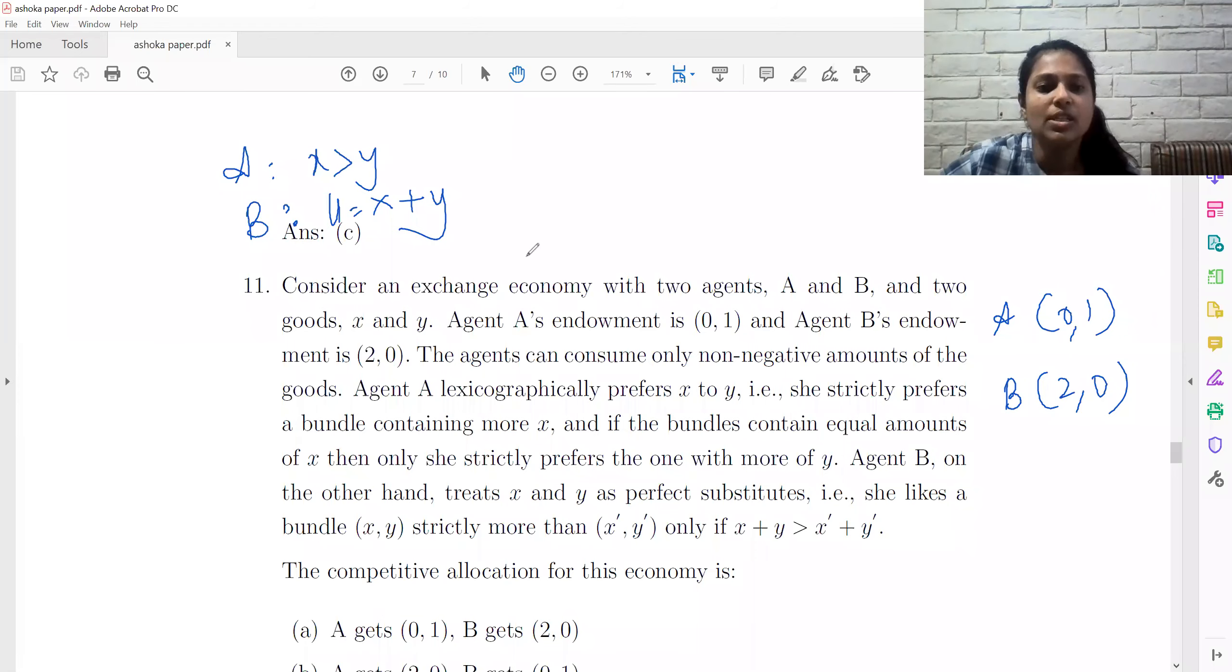This is a Shoka University sample question 11. We have two agents A and B. Agent A's endowment is given to us as 0,1. And Agent B's endowment is given to us as 2,0. A's utility function is given as lexicographically preferring X to Y. And B's utility function is given as perfect substitutes which is X plus Y.